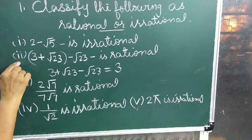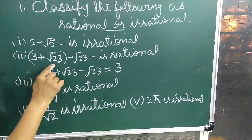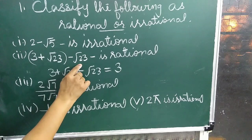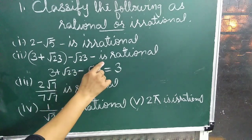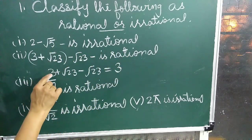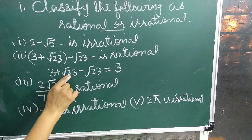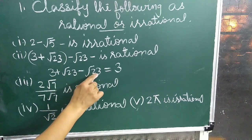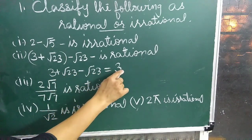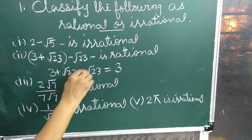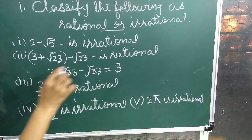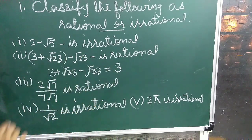Question number 2: 3 plus root 23 minus root 23 is rational. Because 3 plus root 23 minus root 23 equals 3 — the root 23 terms cancel, and 3 is the answer.